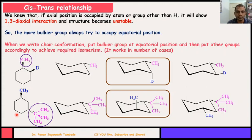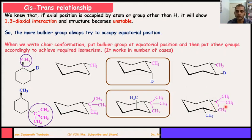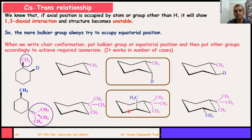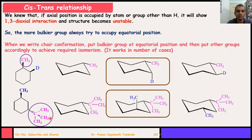Dear friends, don't get confused. In this example, if tertiary butyl and methyl are both on equatorial positions, then that structure is more stable — no doubt. But that structure is the cis structure. We want to draw the trans structure of this molecule, so the other structure is the correct one. If you consider stability, the cis conformer is more stable than the trans. But here we are looking at how to draw the correct chair conformation of these multisubstituted molecules.